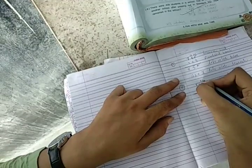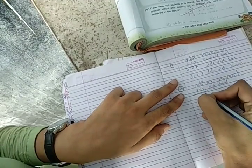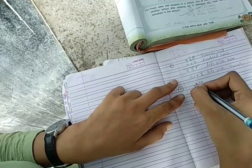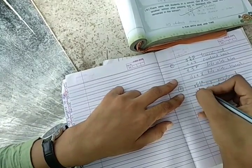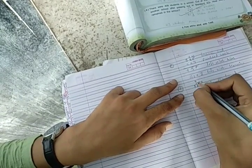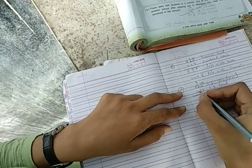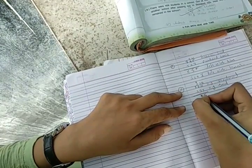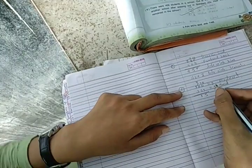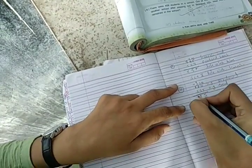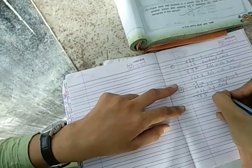Ab 0 mein se 5 nikale ga? Nai, toh us per 10. 10 mein se 5, aga minus ho jai, toh 5. 6 per 5. 5 mein se 7 nikale ga? Nai, toh us per 10. 10 or 5, 15. 15 mein se 7 nikale, toh 8. 5 per 4. 4 mein se 3 nikale, toh 1.